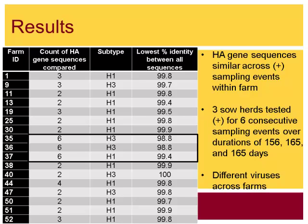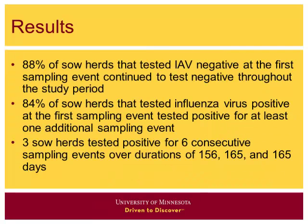The major takeaways are: 88% of sow farms that tested flu-negative at the first sampling event continued to test negative throughout — suggesting something within those farms keeps them negative. In contrast, 84% of farms that tested positive at the first event tested positive on at least one additional event. Three sow farms tested flu-positive at consecutive sampling events for approximately 160 days, which was only possible to demonstrate because of the multiple sampling events in this study design.